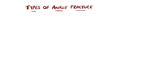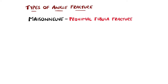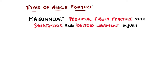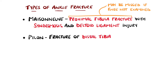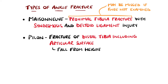Other types of fractures include a Maisonneuve injury, where there is a proximal fibular fracture with syndesmosis and deltoid ligament injury. This is an unstable injury that will need surgical intervention, which is why the knee should also be examined in patients with ankle injuries. A Pylon fracture is another type, typically due to a fall from height, where there is a fracture of the distal tibia that also includes the articular surface.